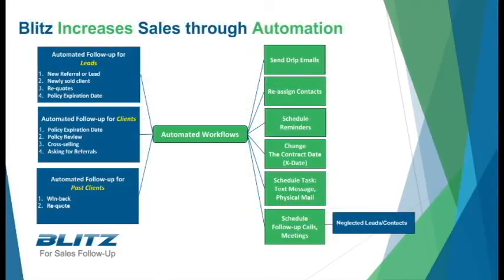One of the top reasons Blitz is used alongside eAgent is Blitz's targeted automation. Blitz will automatically schedule follow-ups each day for your LSPs and send emails on their behalf to bring leads into the next stage of the sales process. It will also help generate additional referrals from current clients. With the automation, Blitz targets your leads based on what stage of the sales pipeline they're in. It will target past clients with emails related to winning back their business, keep re-quotes in front of you, and initiate contact with new leads.